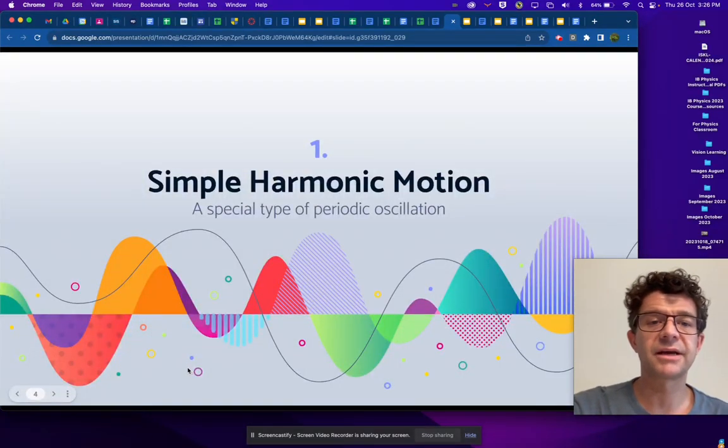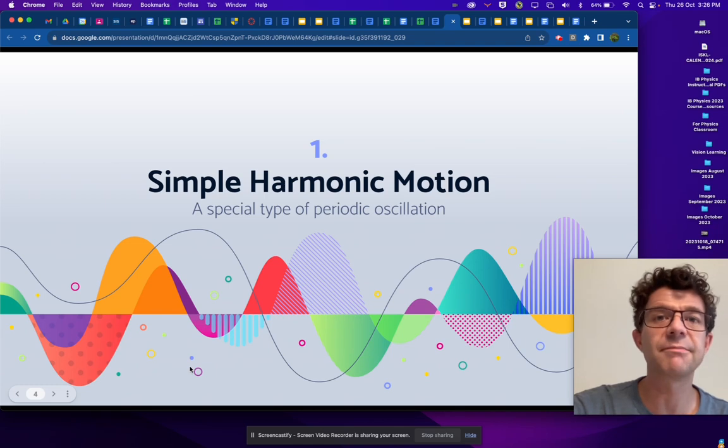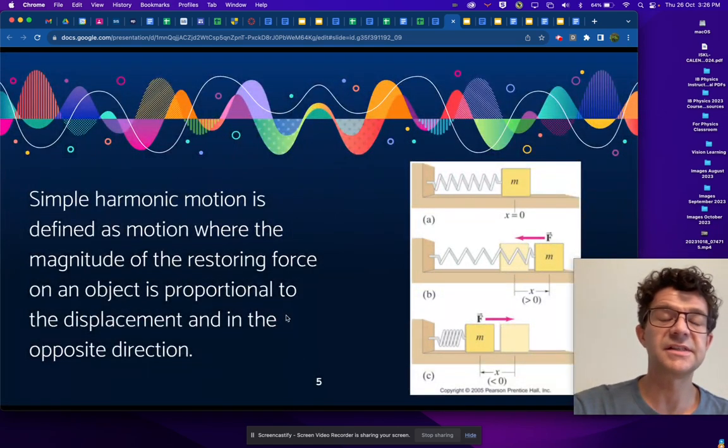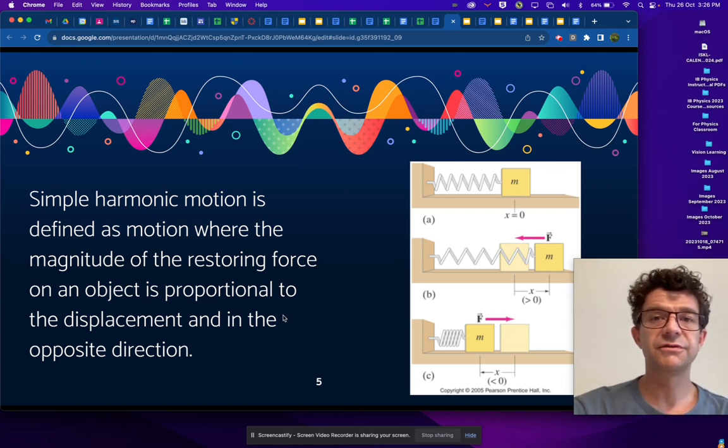When we talk about simple harmonic motion, we're talking about a special type of repeating or periodic motion. And specifically, it's defined as one where the magnitude of the restoring force that's acting on an object is proportional to the displacement, but points in the opposite direction to the displacement.